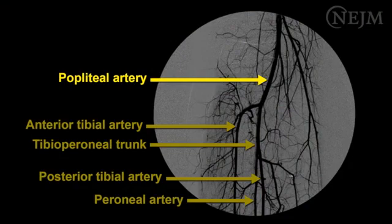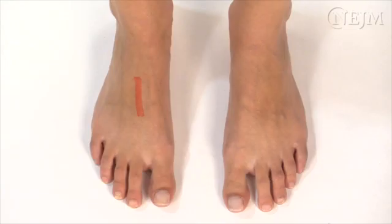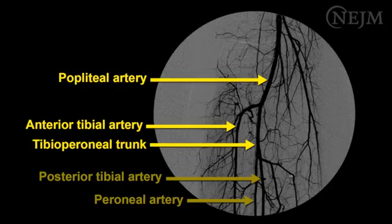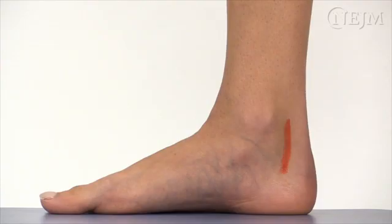Below the knee, the popliteal artery branches to the anterior tibial artery and the tibial peroneal trunk. The anterior tibial artery then travels to reach the dorsum of the foot, where it can be palpated as the dorsalis pedis pulse. The tibial peroneal trunk further divides into the posterior tibial artery and the peroneal artery. The posterior tibial artery travels posterior to the medial malleolus, where it can be palpated as the posterior tibial pulse.